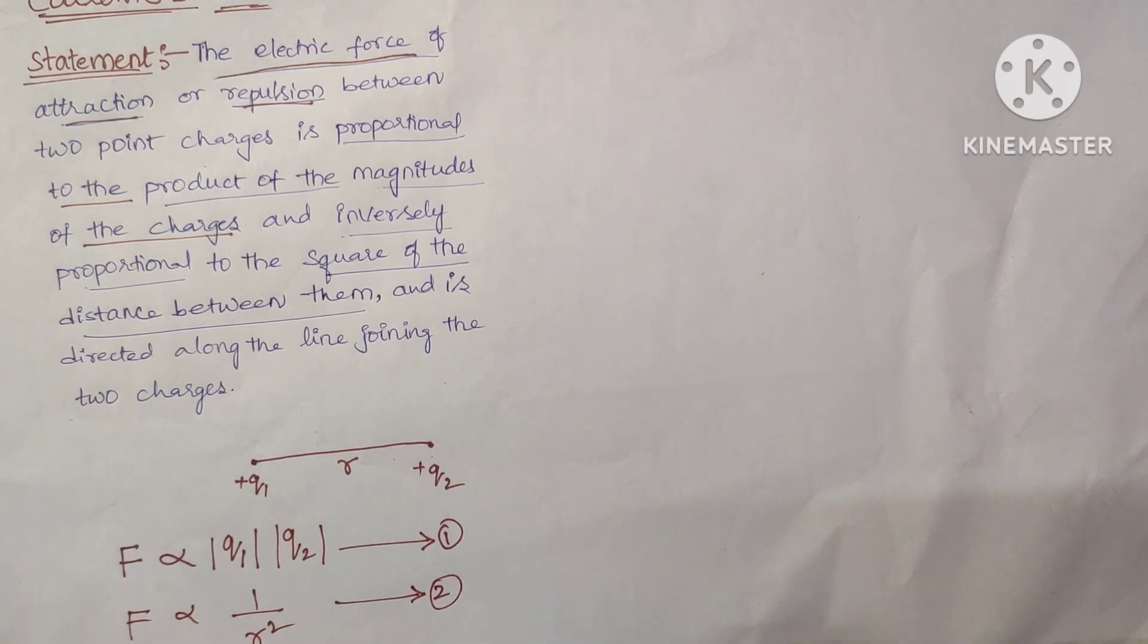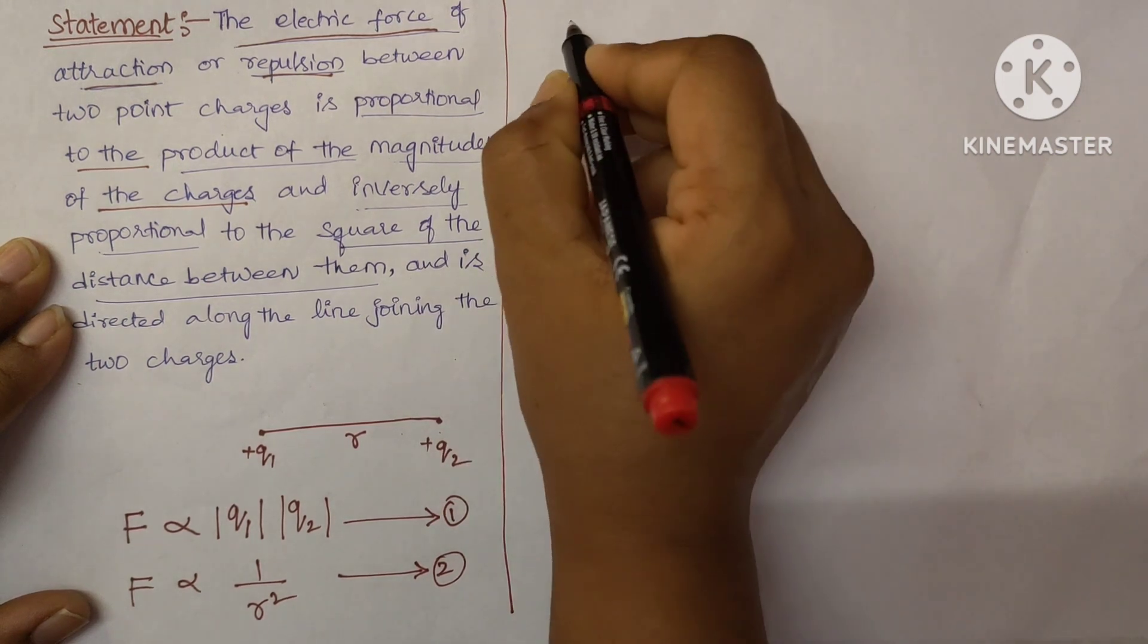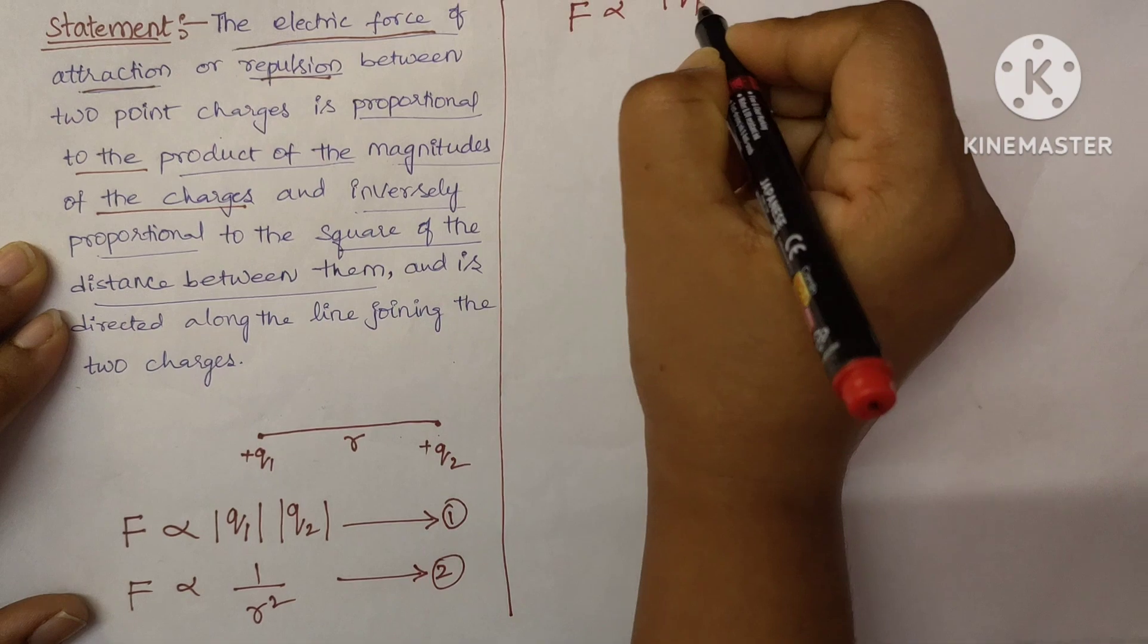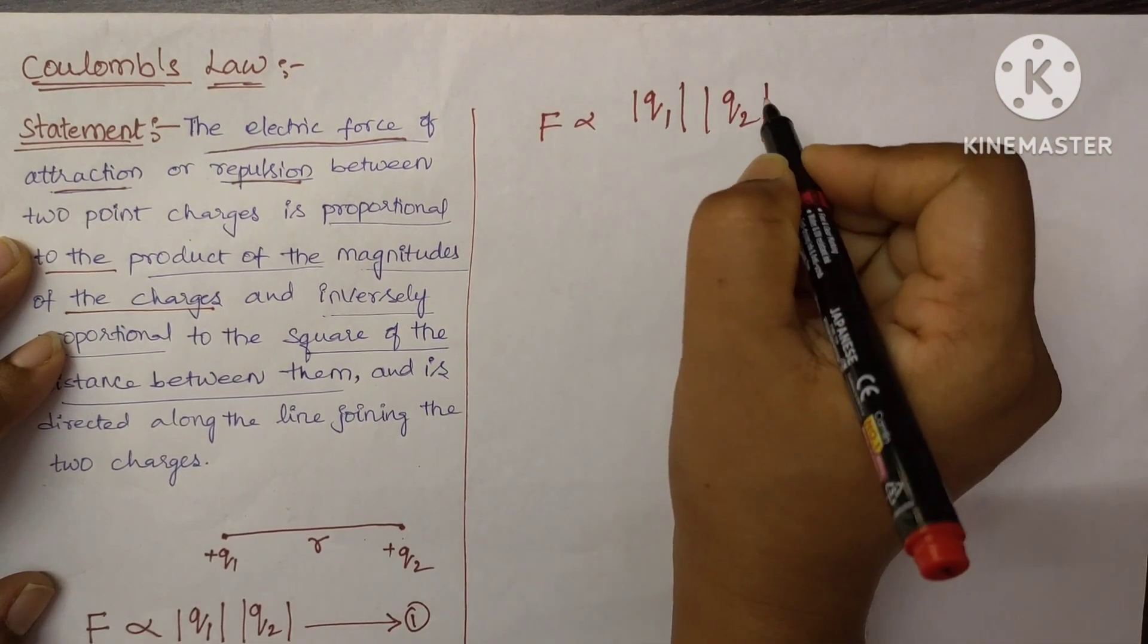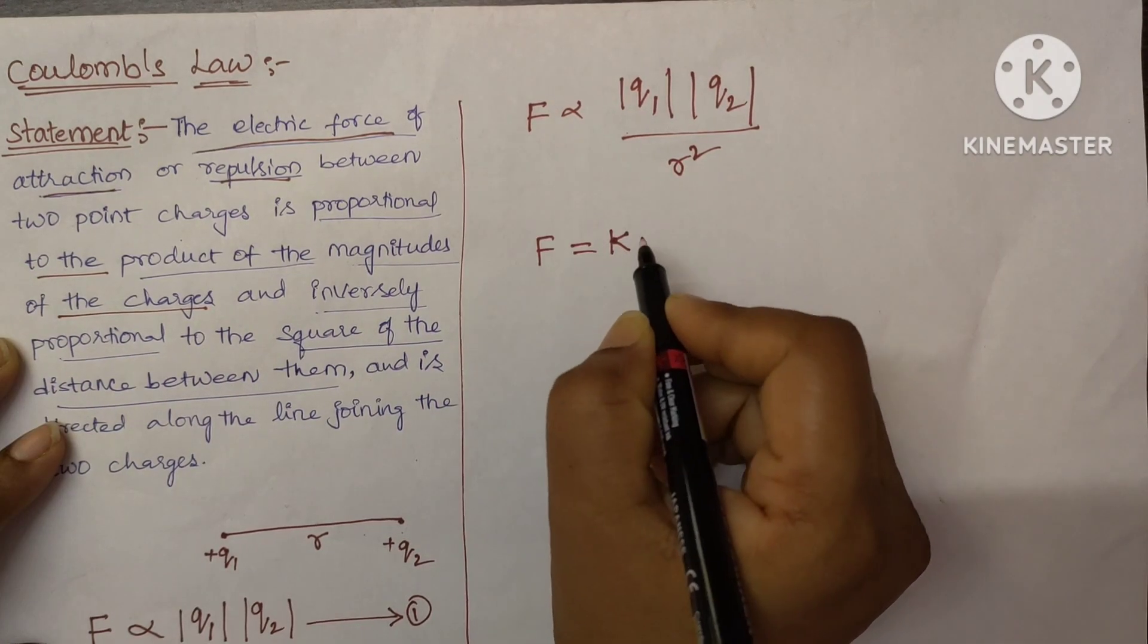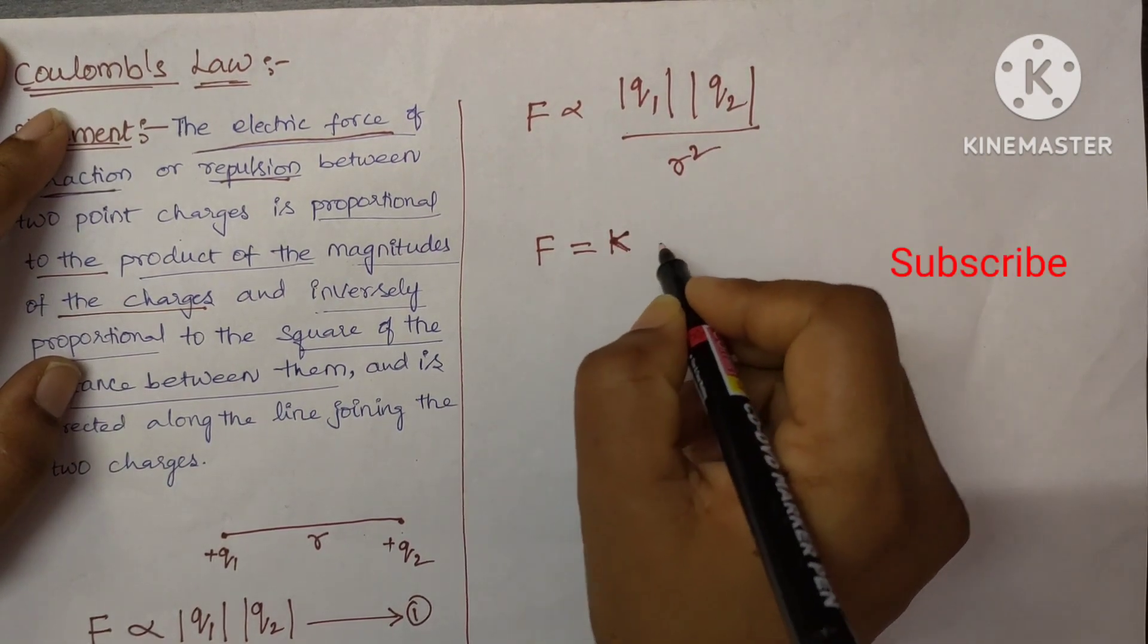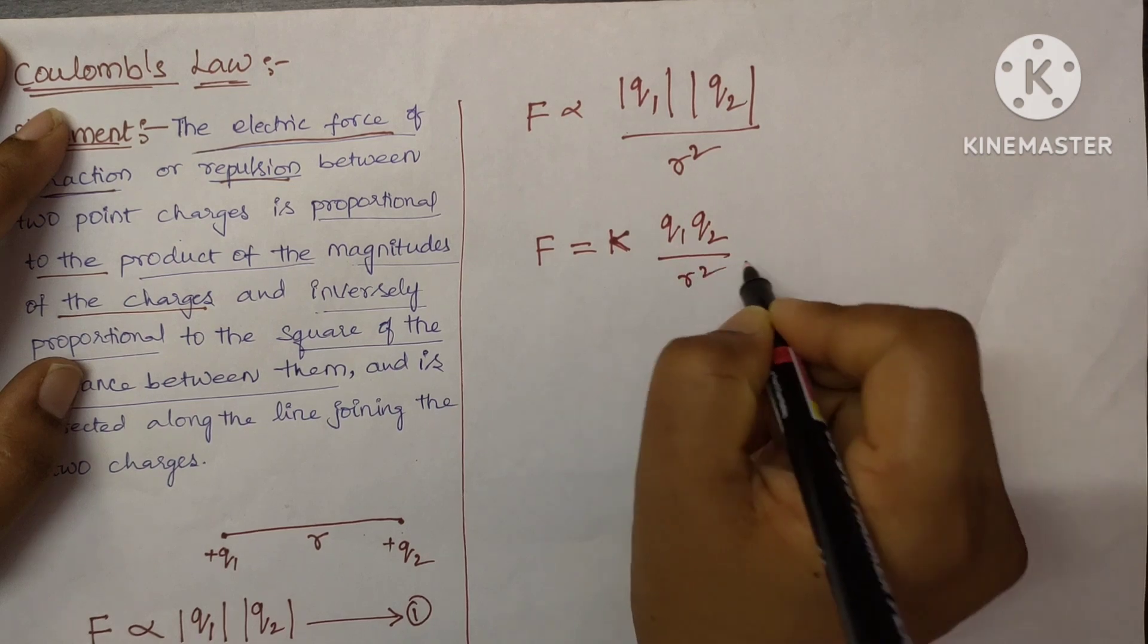From equation number 1 and 2, we can write it as, F is directly proportional to magnitude of Q1 and magnitude of Q2 divided by R square. Now, remove the proportionality by keeping some proportionality constant. Let's say, here it is K. Q1, Q2 by R square.